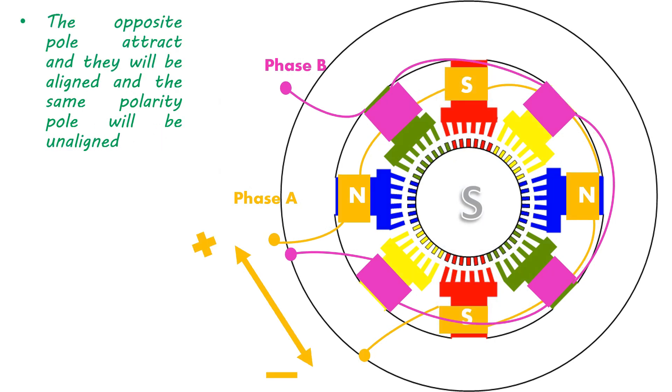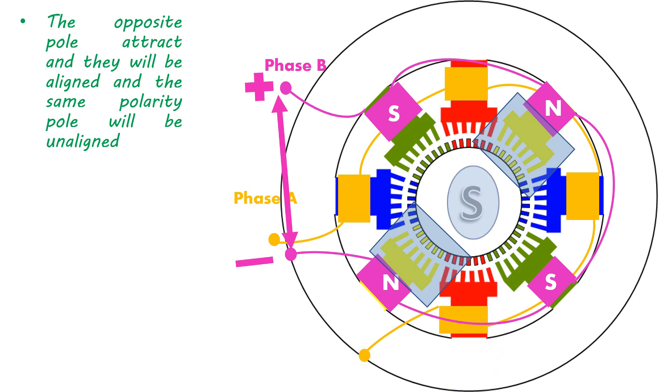In the next turn, excitation of phase A is removed and phase B is energized, and stator pole is generated as shown here. N pole is generated under the yellow group of stator phases and attractive force of N pole of stator and S pole of rotor tries to align each other.